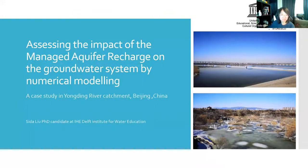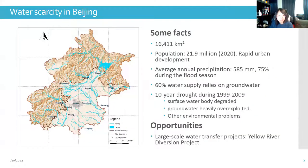Good day everyone. I'm very honored to share with you a case study I've been working on: assessing the impact of managed aquifer recharge on the groundwater system in Yongding River catchment by numerical modeling. As you may know, Beijing is the capital of China and is under rapid urban development. The total population is around 22 million at the end of 2020. However, the average annual precipitation is only 585 millimeters per year with very uneven temporal distribution.